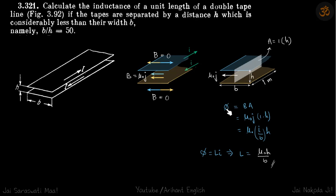Flux is equal to BA, where B is mu not j and area is 1 into h. This cross sectional area is this shaded white part.